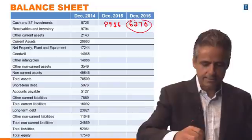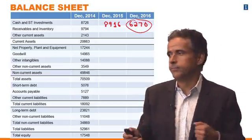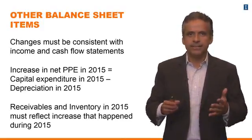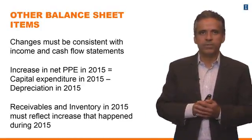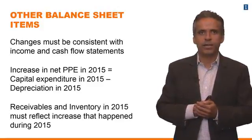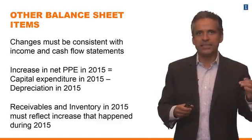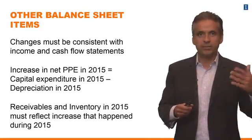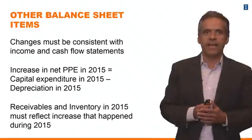So this is the number. PepsiCo's cash, according to our forecast, is going to go to $6.3 billion. What about the other balance sheet items? As I said, we don't have to worry so much about those now. The important thing to notice is that the changes in the balance sheet have to be consistent with the changes in the income and the cash flow statement — that's what we did for cash. Our cash flow statement projects that cash is going to go down by $2.5 billion, and the balance sheet reflects that.